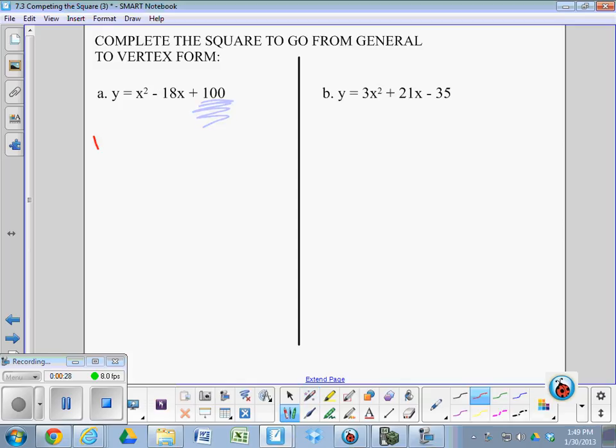And here's how it works. You leave the x squared minus 18x. You add a perfect square. You get why I'm using a little square there? Because you're going to add a perfect square. And right away, subtract it.